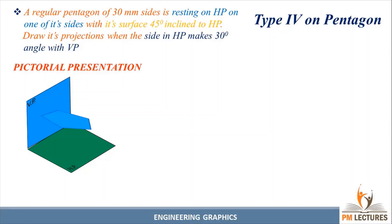The given data: the polygon is a pentagon and the dimension is 30 mm for each side. It's a pentagon, so we have five sides to draw. The surface inclination is 45 degrees inclined to HP, the edge inclination is 30 degrees with VP, and the condition for the problem is that one of the sides is resting on HP.